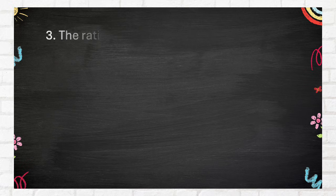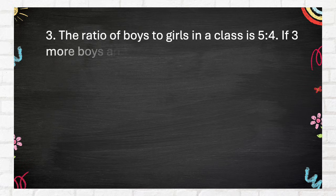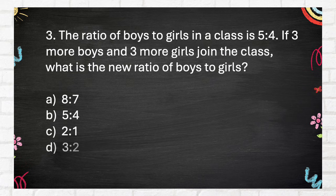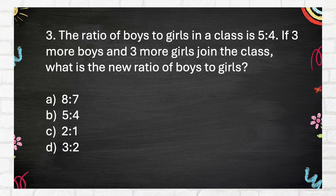Number 3. The ratio of boys to girls in a class is 5 to 4. If three more boys and three more girls join the class, what is the new ratio of boys to girls? A. 8 to 7. B. 5 to 4. C. 2 to 1. D. 3 to 2.